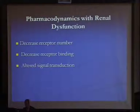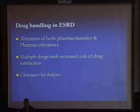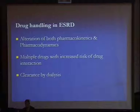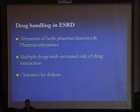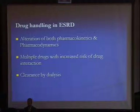For pharmacodynamics, you get a decrease in receptor number and a decrease in receptor binding, and you have altered signal transduction. So by the time the patient reaches end-stage renal disease, they have not only alterations in both pharmacokinetics and pharmacodynamics, but they are also receiving multiple drugs with increased risk of drug-drug interactions, and these patients will undergo dialysis with clearance of drugs during dialysis. Those drugs which are removed by dialysis require a supplementary dose at the end of dialysis equal to the amount of drug removed during the procedure.